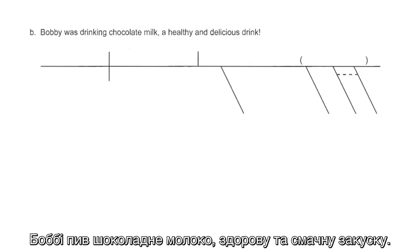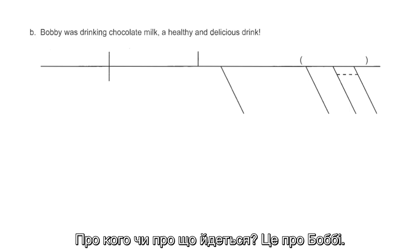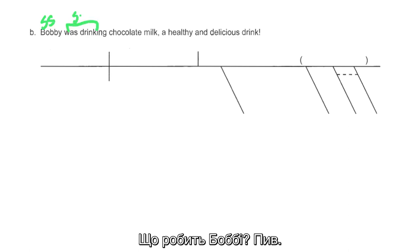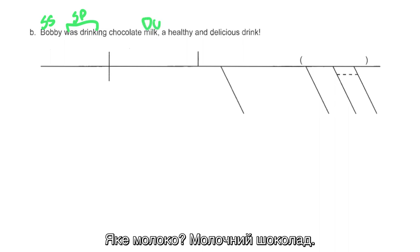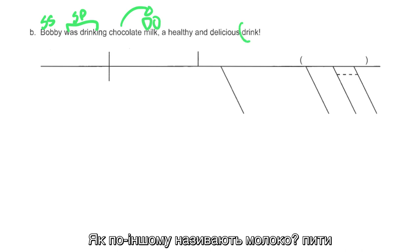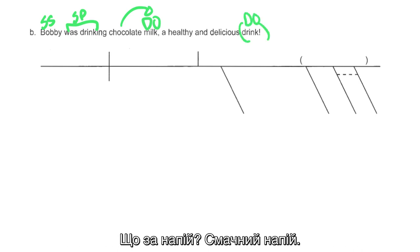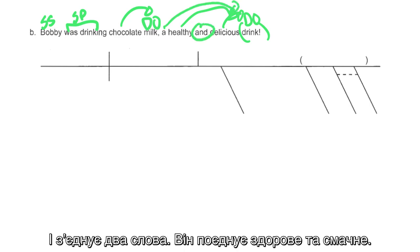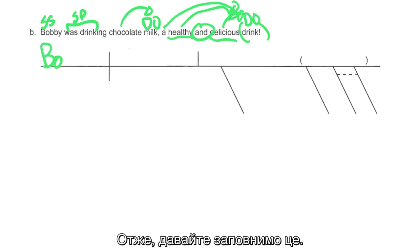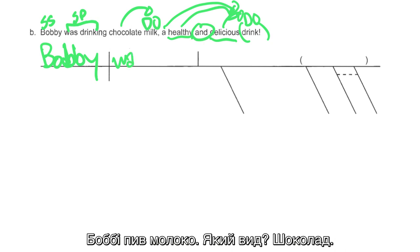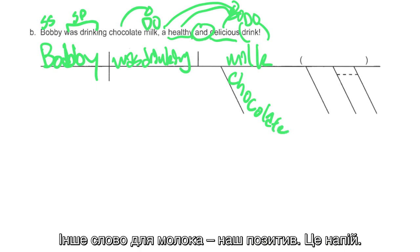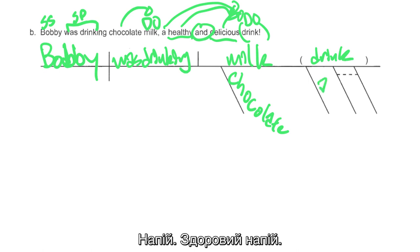'Bobby was drinking chocolate milk, a healthy and delicious snack.' Who or what is this about? This is about Bobby. What does Bobby do? Was drinking. Was drinking what? Milk. What kind of milk? Chocolate milk. What's another name for milk? Drink — so drink is our appositive for the direct object. What kind of drink? Delicious. What kind of drink? Healthy. How many? A drink. And connects healthy and delicious. So: Bobby was drinking milk — chocolate milk — and the appositive is drink, a drink, with healthy and delicious underneath.